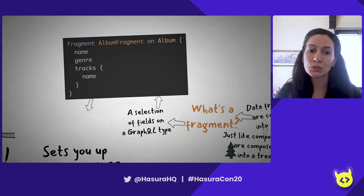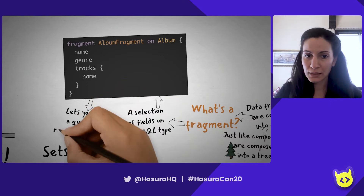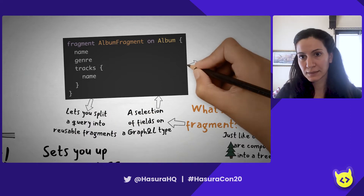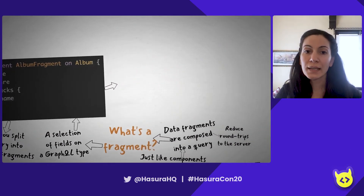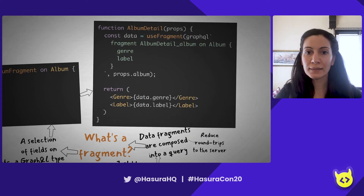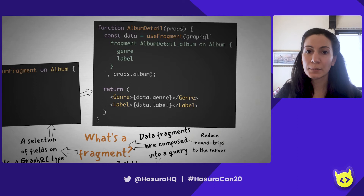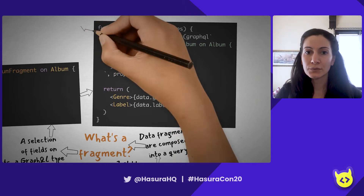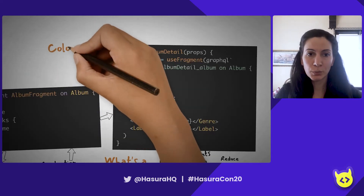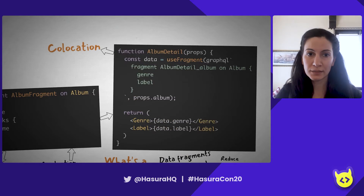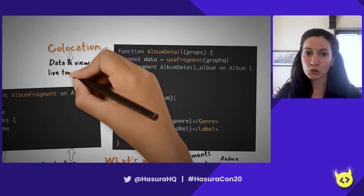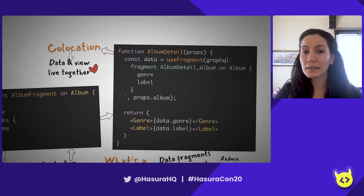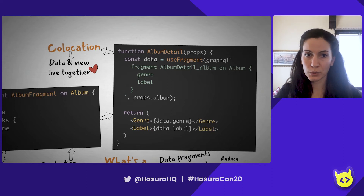This allows us to split a query into reusable fragments. In Relay, this is how you would do that. This is an album detail component — it's showing its fragment and its view, and they're both inside the same component. This is called collocation. This means that data definitions and view definitions live together, so we have the data fragment and the view inside the same component.